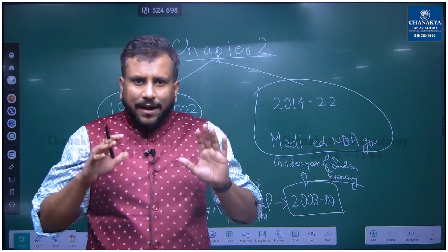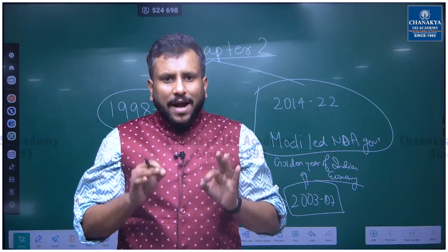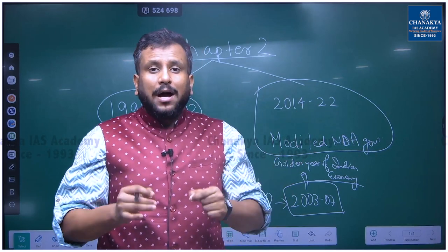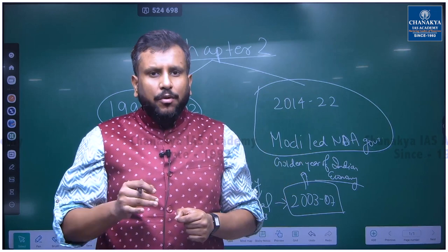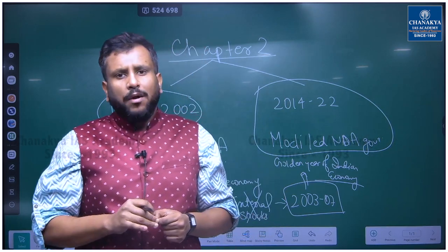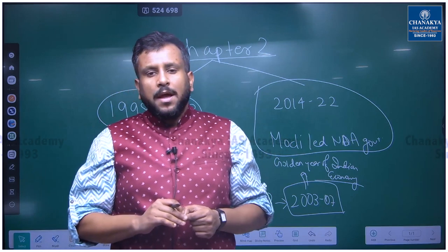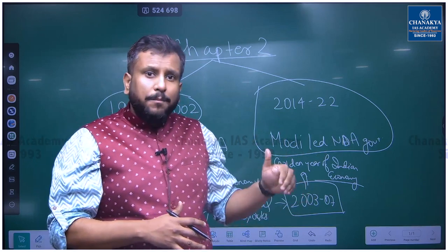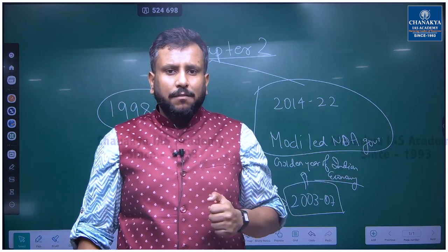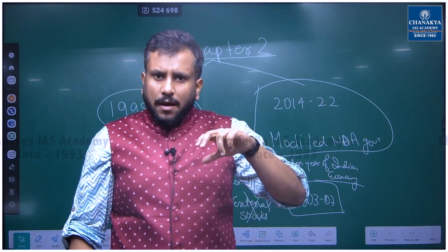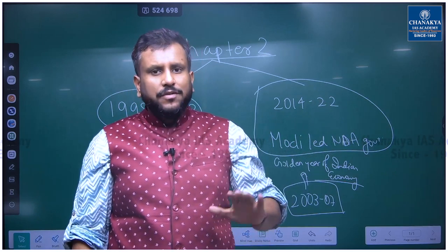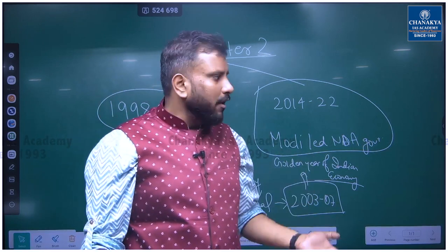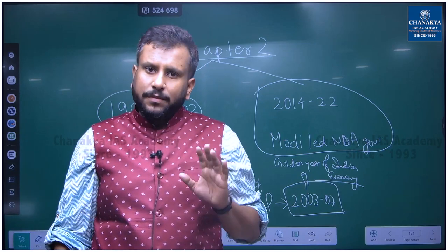Basically, what this chapter tries to answer is: despite all the reforms brought by the government, why didn't growth or development come? GDP was growing at a much lower rate, even before the pandemic, and there were some employment issues. The survey says the government did a credible job in terms of reforms, but problems came from outside. Once those problems end, the benefits of reforms will be visible.